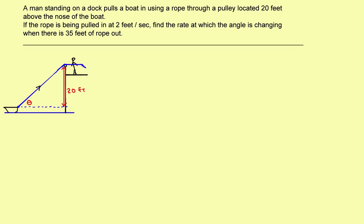Here's the problem. You've got a man standing on a dock and he's pulling a boat in. He's pulling on this rope at two feet per second, through a pulley located 20 feet above the nose of the boat. If the rope is being pulled in at two feet per second, find the rate at which the angle theta is changing when there's 35 feet of rope out.